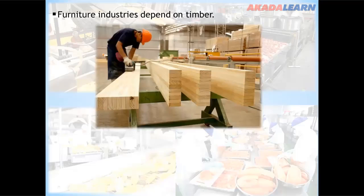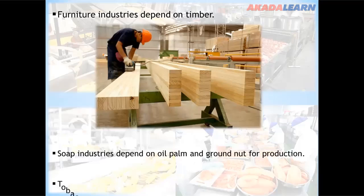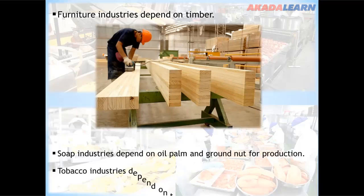We have the furniture industries which depend on timber for making furniture. We have soap industries which depend on oil palm and groundnut for production. We have tobacco industries which depend on tobacco to make cigarettes.